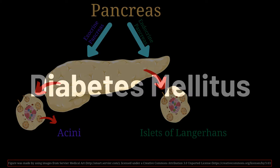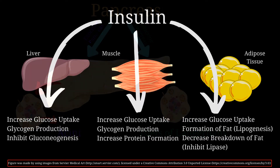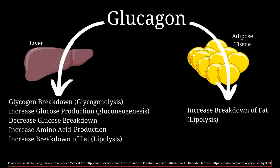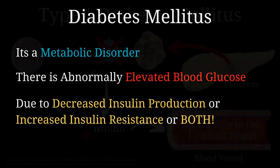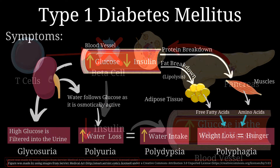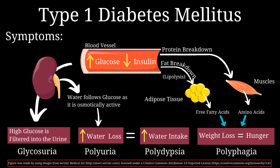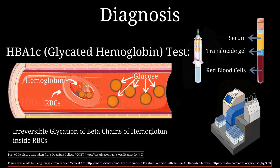Hello and welcome to our lecture on diabetes mellitus. We'll start off by talking about the pancreas, which is an organ located in the left hypochondriac region, then we'll move on and cover the hormones released by the pancreas. After this we'll cover the pathophysiology and symptoms associated with diabetes mellitus, and finally we'll finish off by discussing some diagnostic tests. So let's get started.